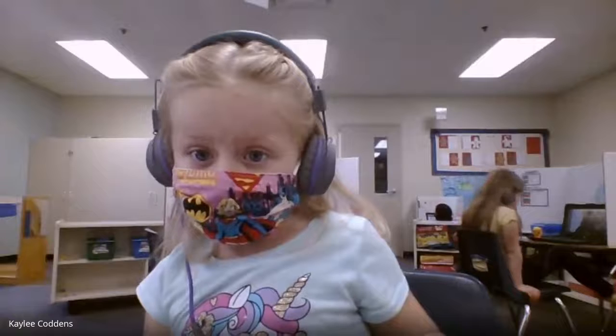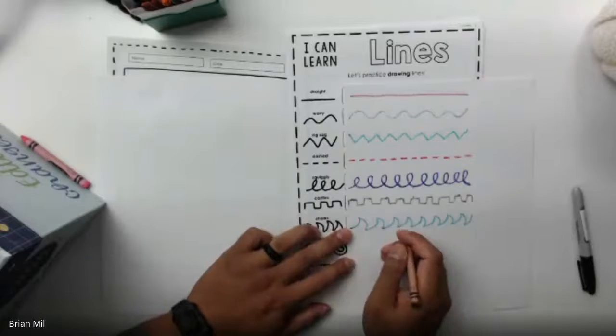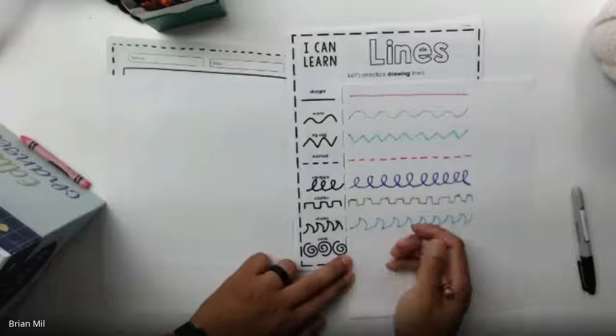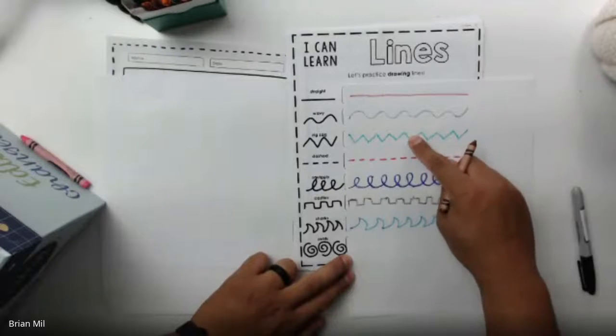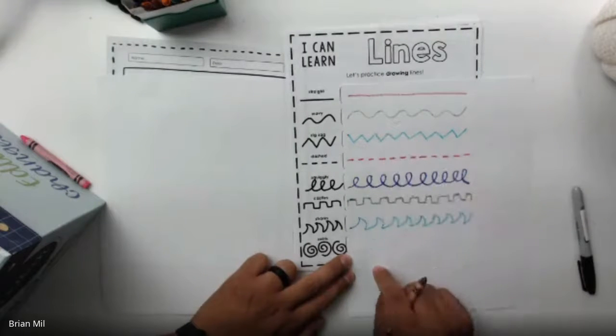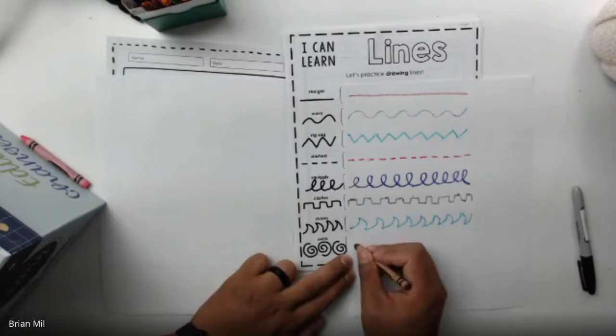I can't do the shark lines? That's okay, it takes practice. Sometimes it's kind of like the zigzag line but you just curve it instead. The zigzag and shark one are very similar. All right, I'm going to do the swirls next.